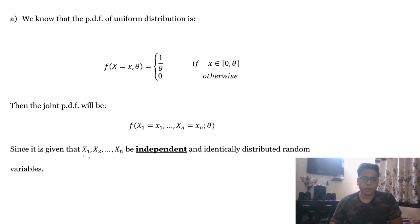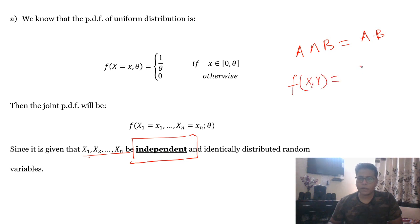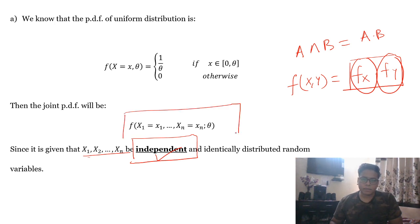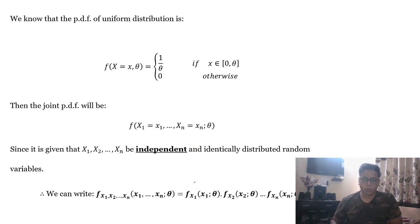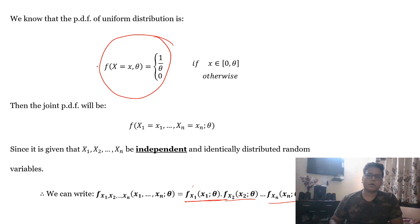We know the basic property of independence: for two sets A and B, the probability of their intersection equals P(A) × P(B) if they are independent. For a joint random variable, this means the joint PDF equals f(x) × f(y) — the product of their marginal PDFs. So for independent random variables, we can write the joint PDF as the product of marginal PDFs: the marginal PDF of X₁, marginal PDF of X₂, and so on through marginal PDF of Xₙ.